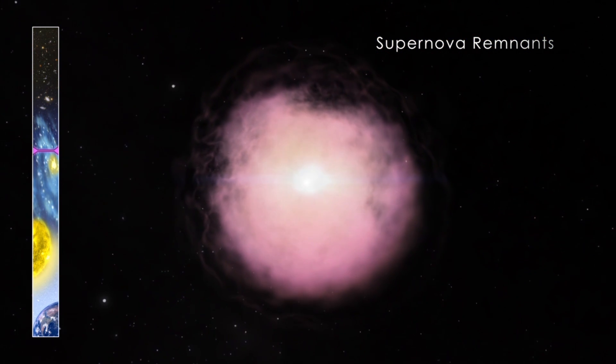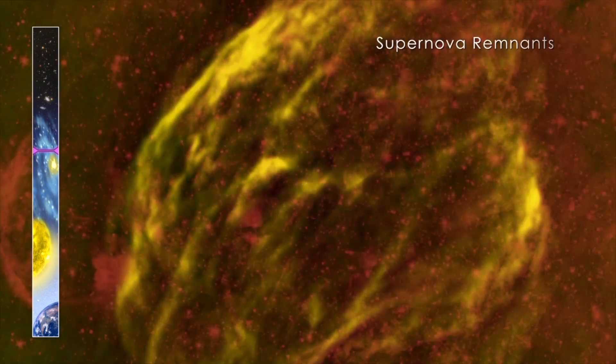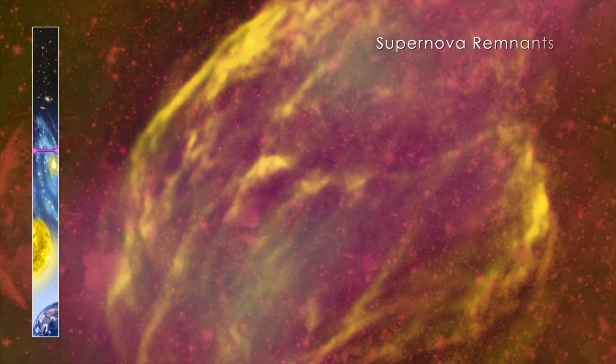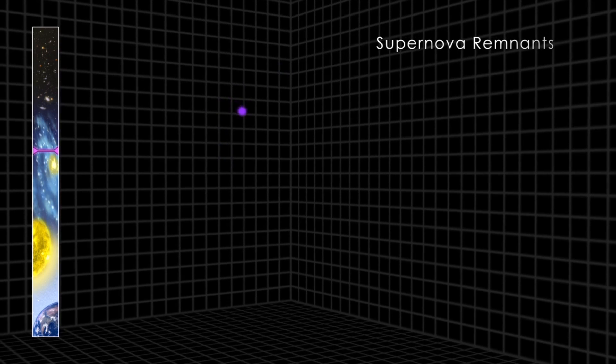Observations of two supernova remnants by NASA's Fermi Gamma-ray Space Telescope conclusively show these supernova remnants are accelerating protons. When they strike protons in nearby molecular clouds, they produce the gamma ray emission Fermi sees.